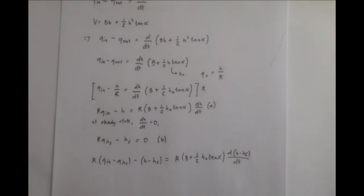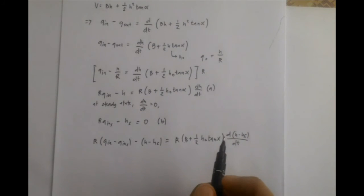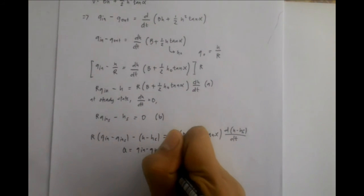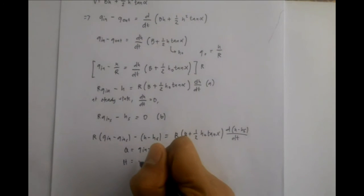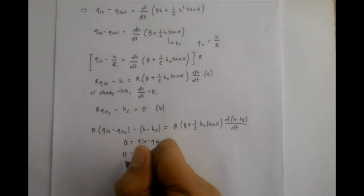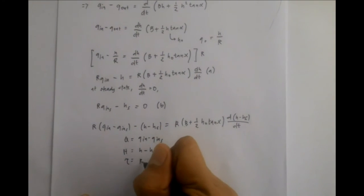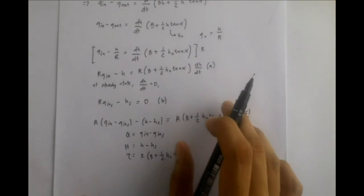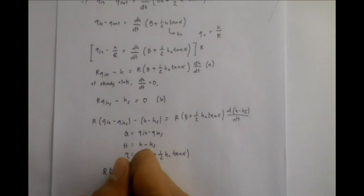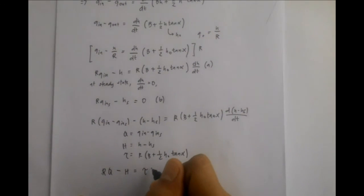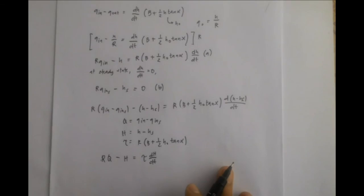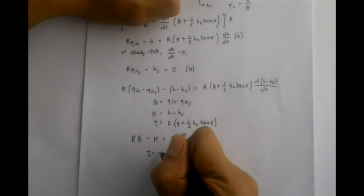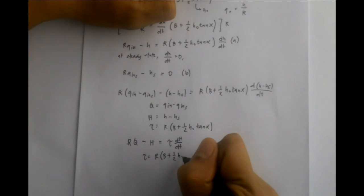Now, we will use deviation variables to simplify this equation. These are the deviation variables. Now we will get R times Q'_in equals R times B plus one-half H sub-zero tangent alpha times dH'/dt. Simplifying, we can get the final form of the equation.